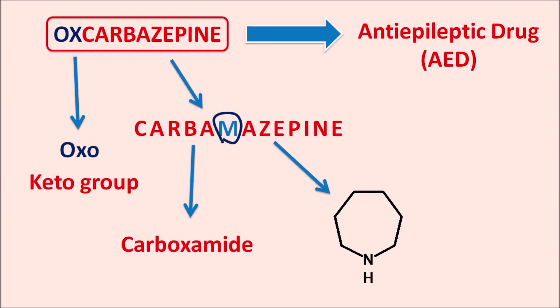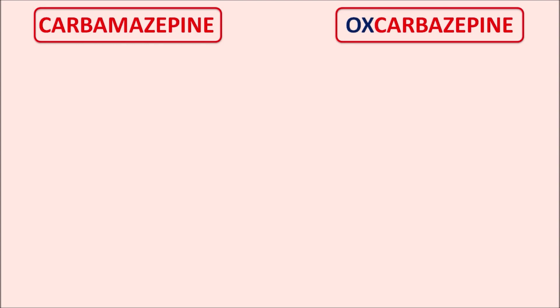This keto group makes oxcarbazepine a newer generation drug. Just like carbamazepine, oxcarbazepine is also a prodrug which undergoes bioactivation resulting in an active metabolite. Now, what are the differences between carbamazepine and oxcarbazepine? We can find a few differences based on the side effect profile as well as structural features.